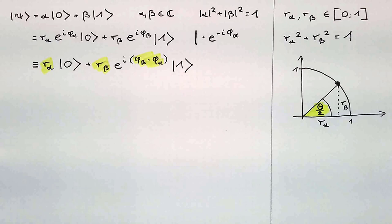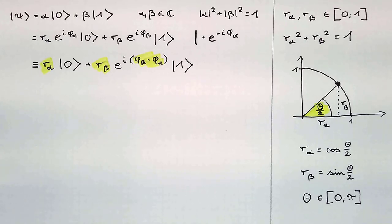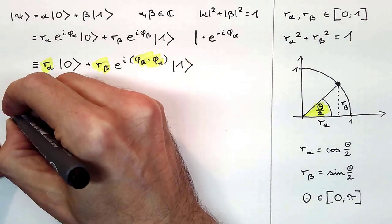After defining zeta, we can write r_alpha and r_beta as follows: r_alpha equals cosine zeta half and r_beta equals sine zeta half, with zeta between 0 and 180 degrees or in radians pi. So now we have achieved something wonderful.